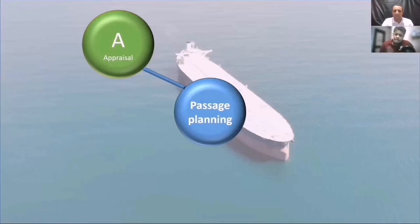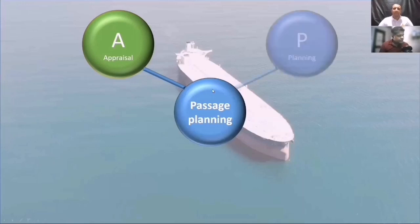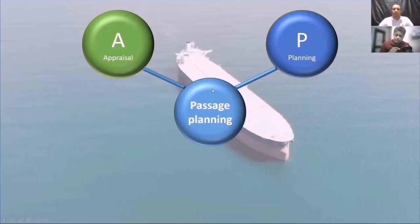Appraisal means you only collect information about that place and how to go to that area. Let's say you are going from Singapore to Tokyo — you have to know everything about this passage. This step is called appraisal. The second part: now you have the information, you have to start planning. When you have all the information, you plot the courses, you draw on the chart on the ECDIS, you plot the courses — and that step is called planning.